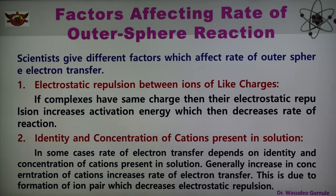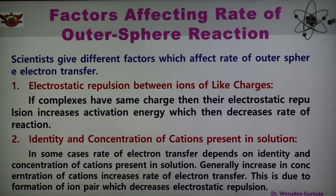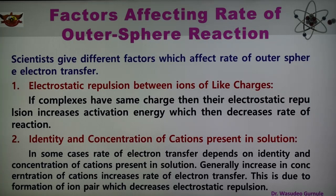The second factor is the identity and concentration of the cation present in the solution. Both are important and affect the rate of reaction. The electron transfer reaction depends on the identity and concentration of the cation present in the solution. Generally it is observed that an increase in concentration of the cation increases the rate of reaction, due to the formation of ion pairs which decreases the electrostatic repulsion. So identity and concentration of cation present in the solution also affects the rate of electron transfer reaction.